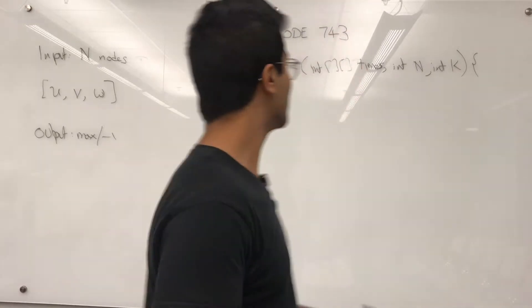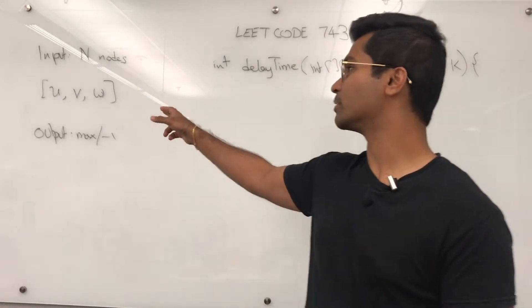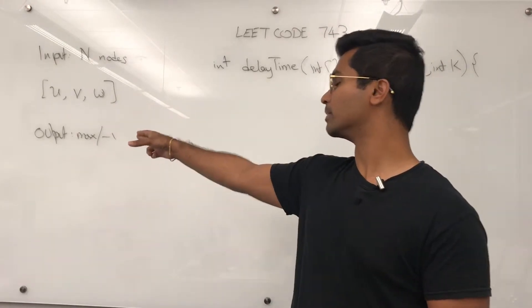What's up everyone? Today we're going to go over LeetCode 743, Network Delay Time. The input is going to be a 2D grid of integers and the output needs to be a number.